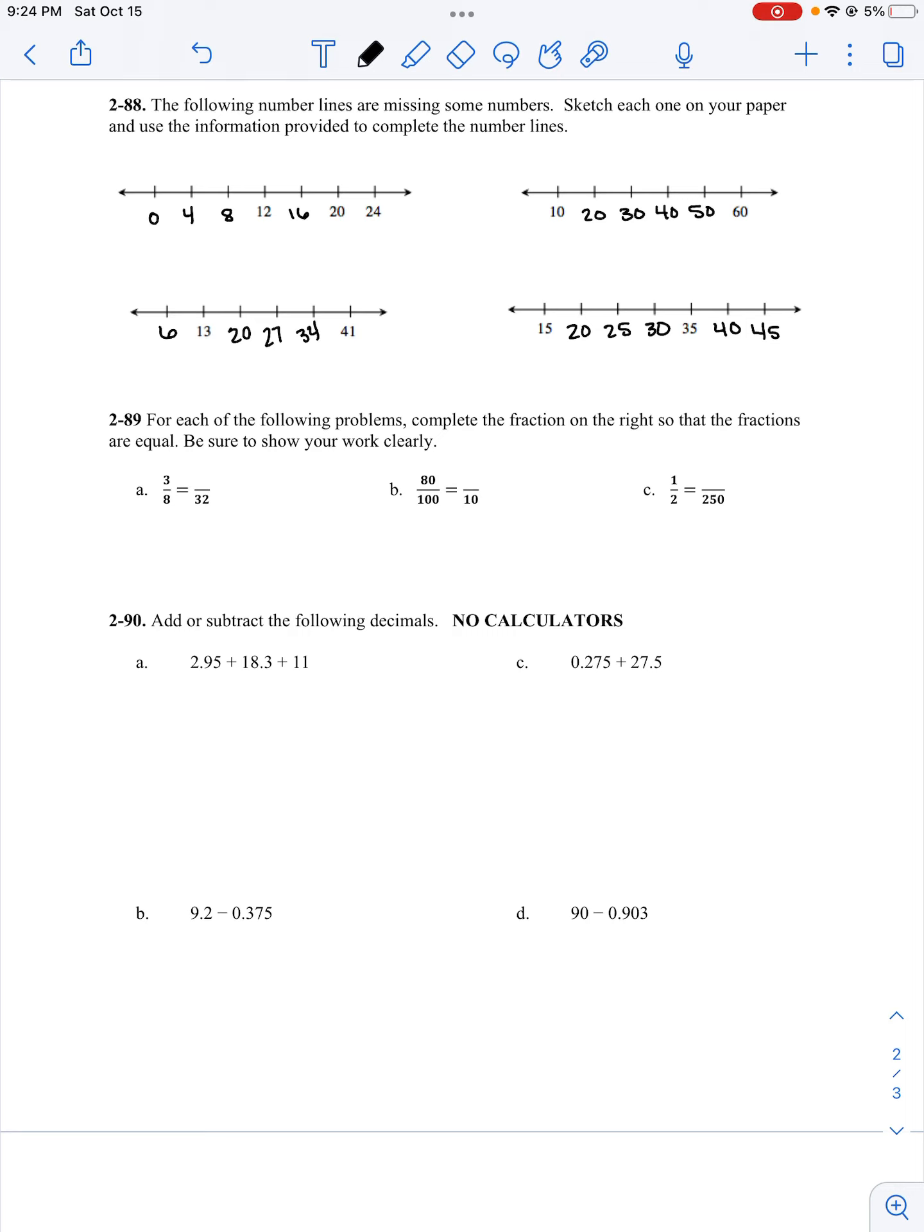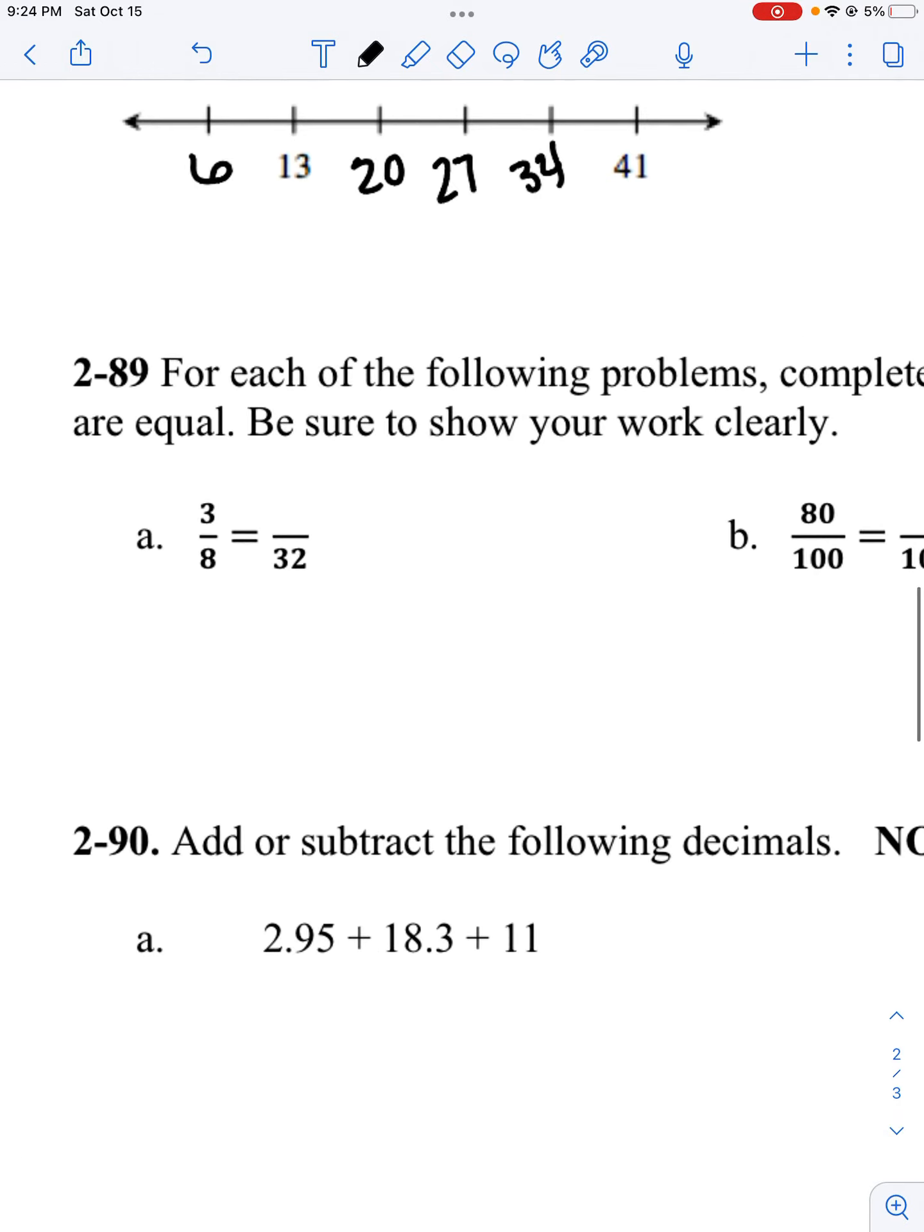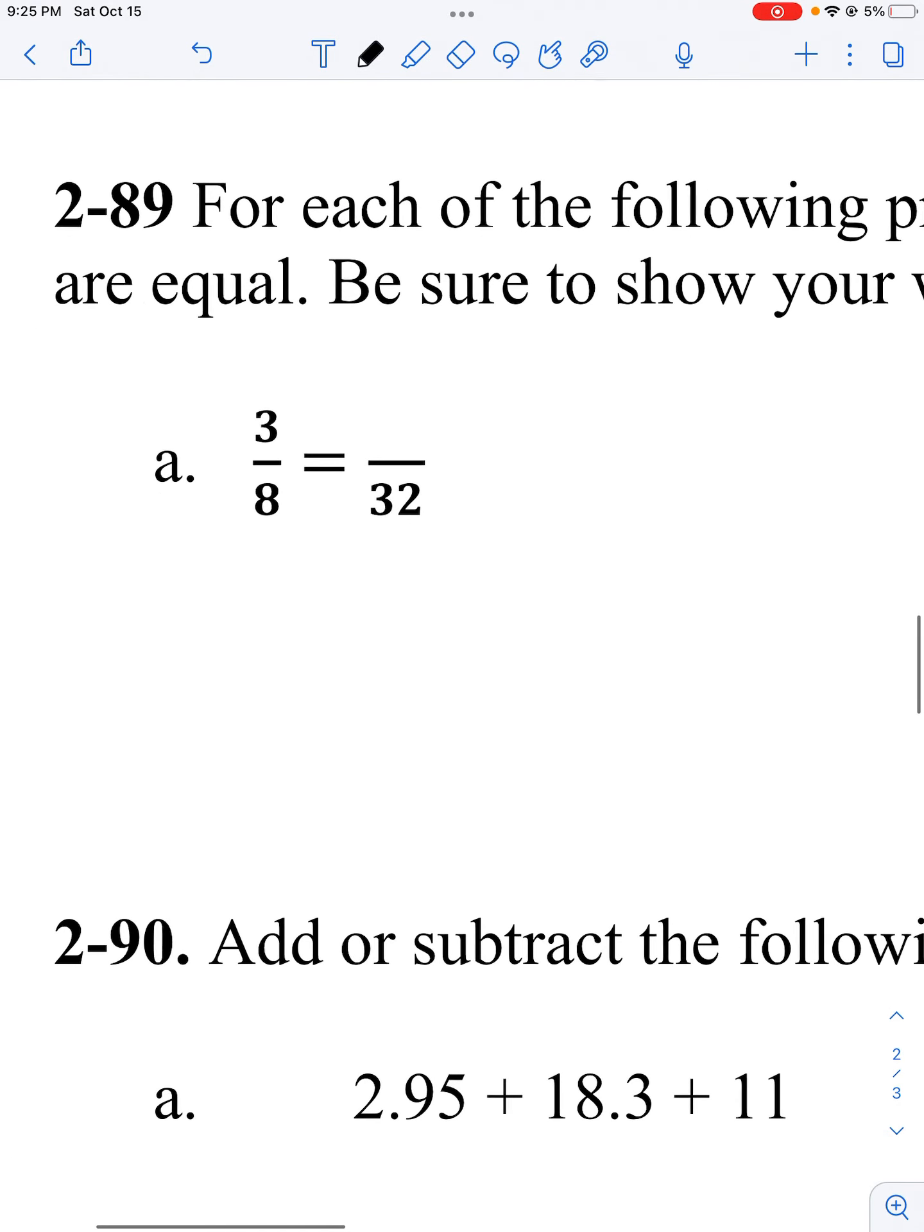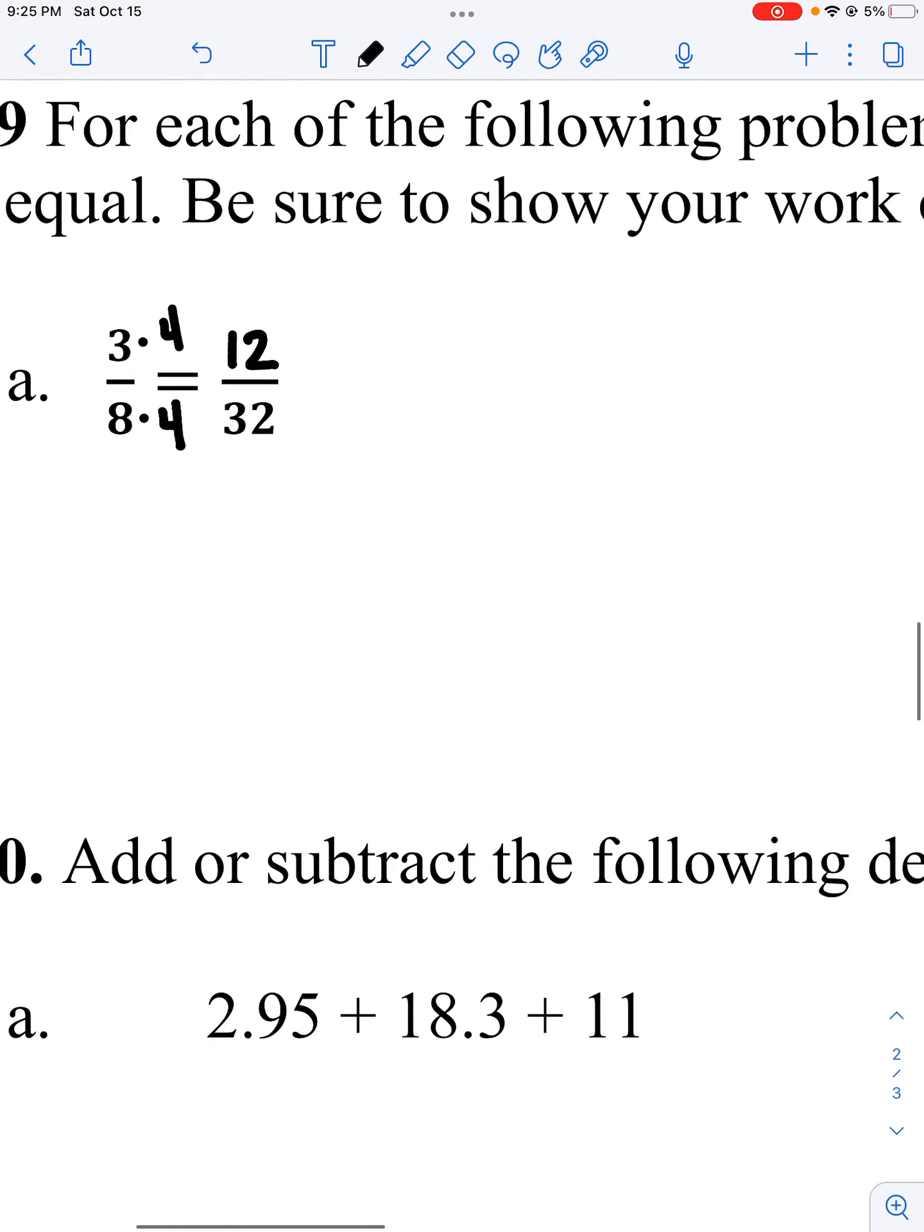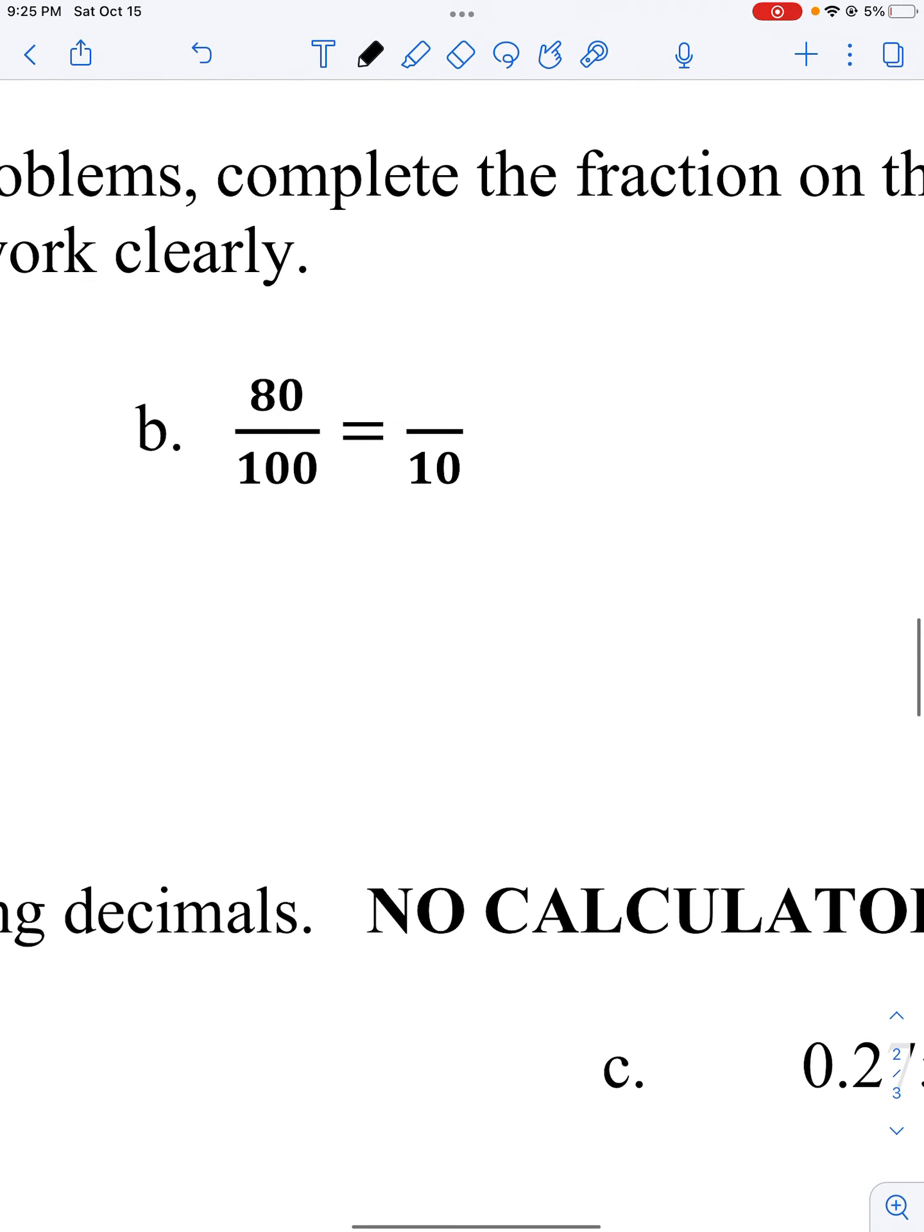Problem 89. We need to complete the fraction on the right so that the fractions are equal. Be sure to show your work clearly. I'm going to zoom in on these. So in order for them to be equal, I have to do the same thing to the numerator and denominator when I'm multiplying. So I know I'm multiplying, but 8 times what is 32? 8 times 4. So 3 times 4 is 12. My numerator would be 12.